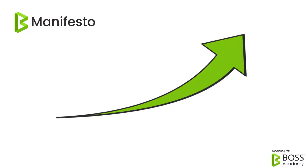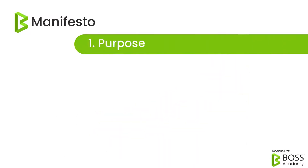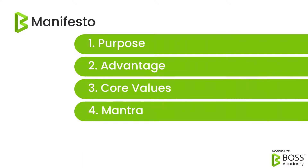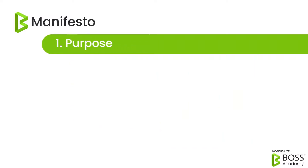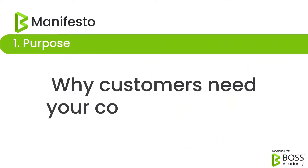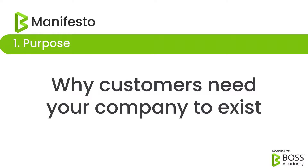A manifesto has five parts, each telling a portion of your company's story and objectives: purpose, advantage, core values, mantra, and exit strategy. You'll use each part of your manifesto for different purposes and at different times, but they all point back to your company's purpose, culture, and objectives.